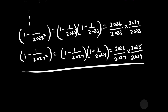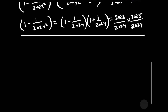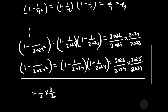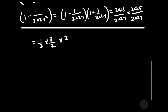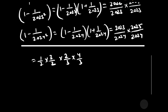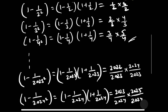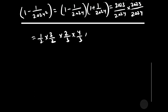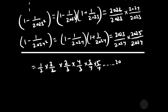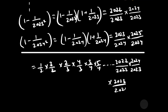Now let us multiply all the calculated values. That can be written as: 1 by 2 into 3 by 2, multiplied by 2 by 3 into 4 by 3, multiplied by 3 by 4 into 5 by 4, and so on, up to 2022 by 2023 into 2024 by 2023, multiplied by 2023 by 2024 into 2025 by 2024.